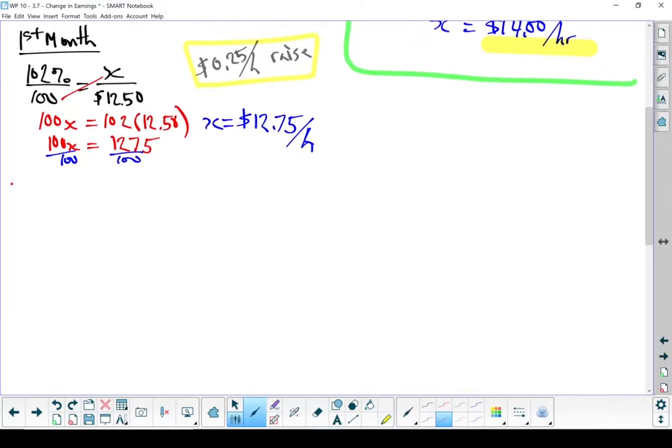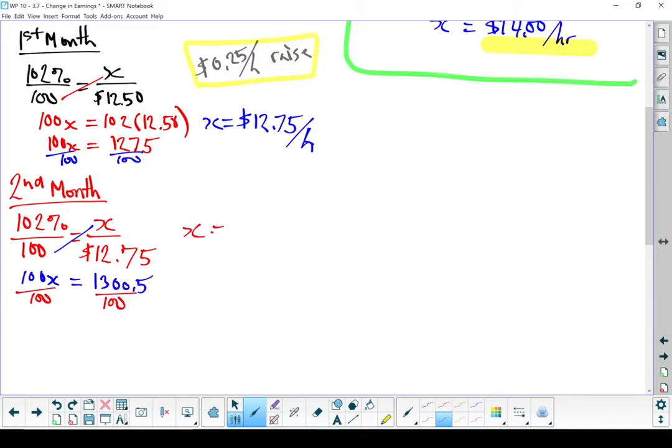Now let's do the second month. It's also going to be a 2% raise, but this time, instead of our whole being $12.50, it's 2% of $12.75. We've got a new whole. Now, after the end of the second month, John is making $13.01. This time, instead of getting a 25 cent an hour raise, he got a 26 cent raise.